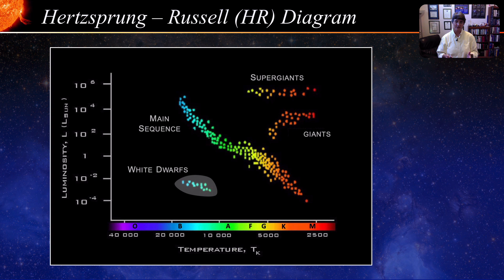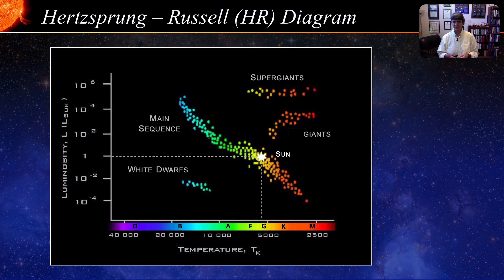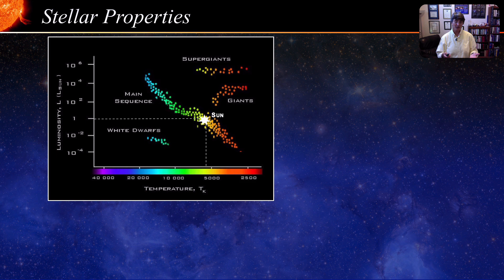Our sun is a G2-type main sequence star with a surface temperature of about 6,000 Kelvin. The HR diagram also gives us information about stellar life cycle: stars spend most of their lives in a happy, stable configuration as main-sequence stars and end their lives relatively fast. All stars start their lives somewhere on the main sequence — precisely where is determined by their birth mass — and will stay on the main sequence for about 90% of their lives until they begin to die.